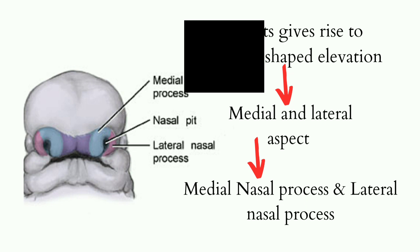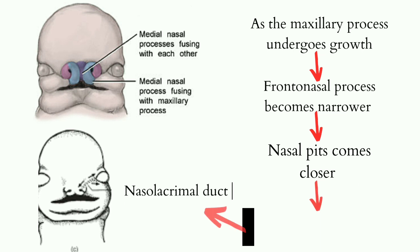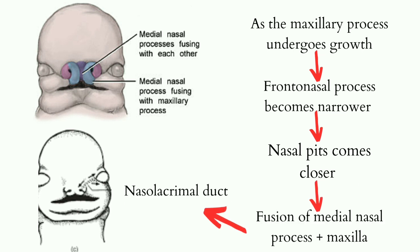As the maxillary process grows, the contralateral nasal process becomes narrower. The nasal pits come closer. The fusion of the medial nasal process and maxillary process gives rise to the nasolacrimal duct.